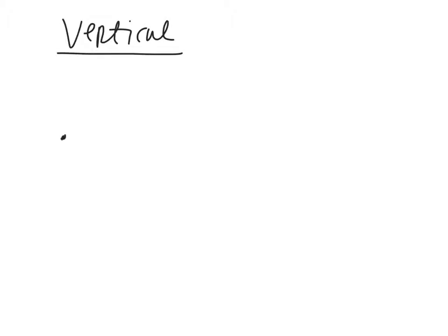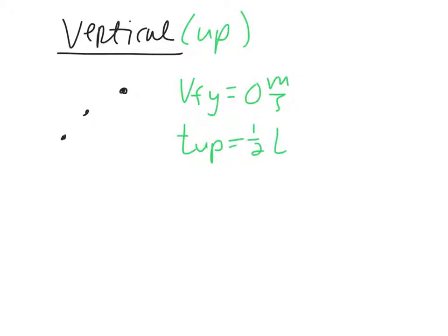We know time, v initial in y, acceleration in y, and v in x. The next thing asked is the maximum height. We still work in the vertical, but since we're looking for maximum height, we only care about the time for the ball to reach the top. If the ball is only going up, the final v in y equals 0 at the top. The time going up equals one half of the total time.